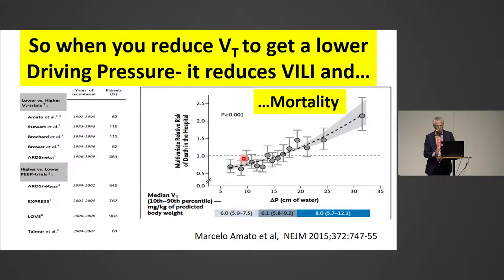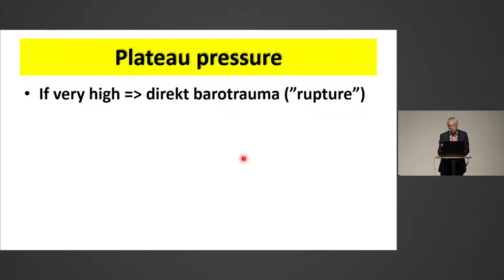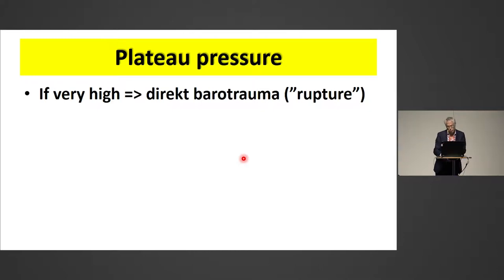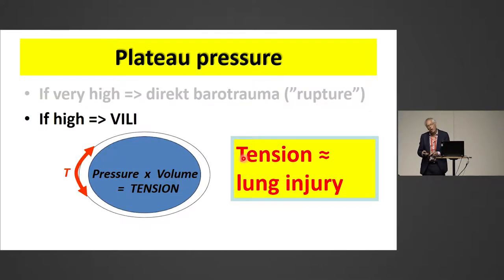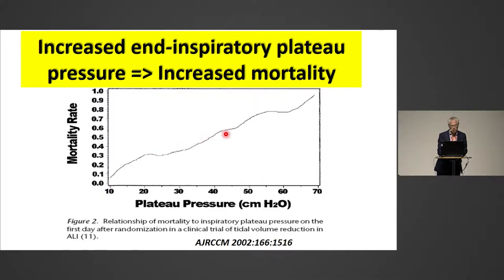We also have end-inspiratory plateau pressure, which has been said should be below 30 cmH₂O. If it's very high — as you saw in the sketch by Arthur Dubois — then you have rupture, barotrauma. If it's high, you increase the wall tension, and that is associated with lung injury. We know that increased end-inspiratory plateau pressure means increased mortality.